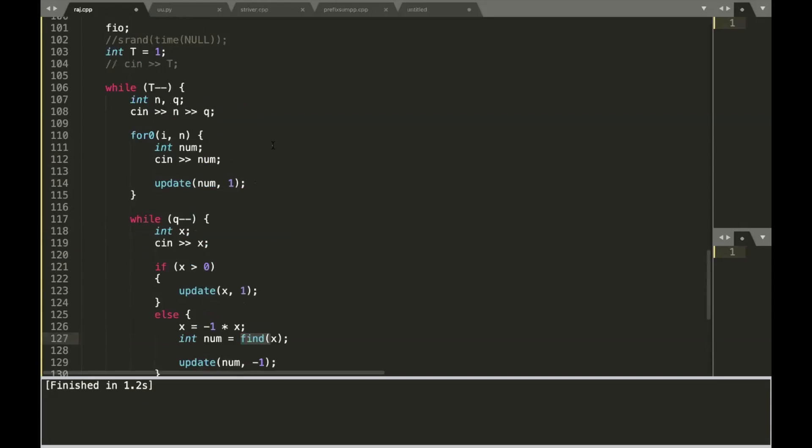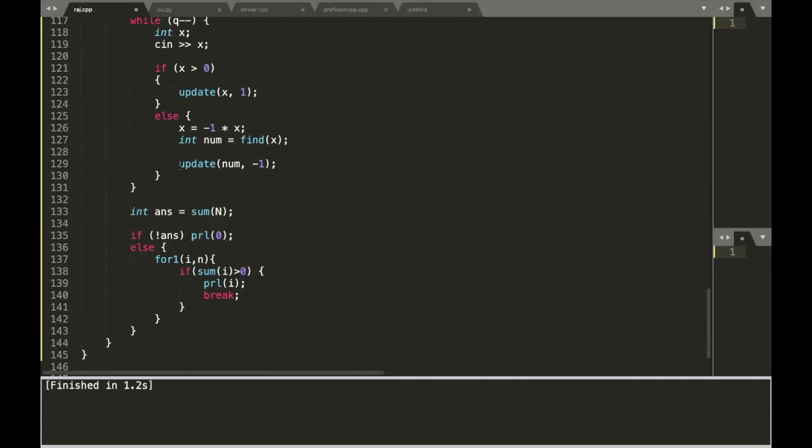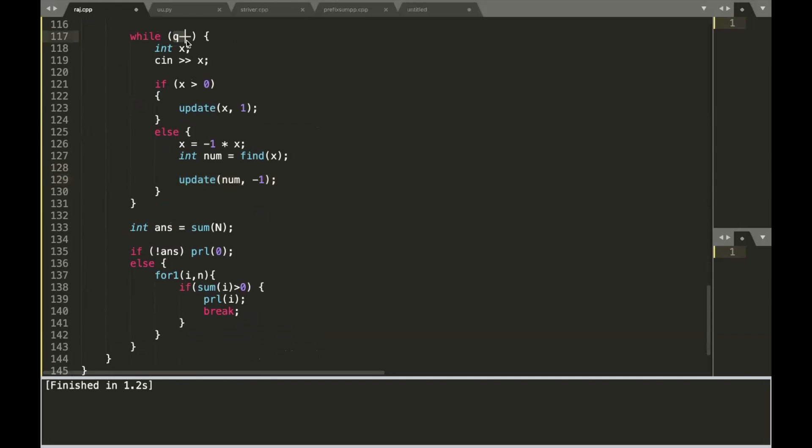If we check out the find function, it is nothing but finding the lower bound in the Fenwick Tree that we learned in the binary lifting of Fenwick Tree tutorial. When we do this, the complexity changes to log n and hence the total complexity will be q into log n. So this is all about the video.